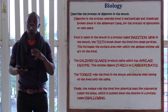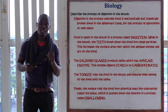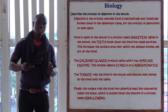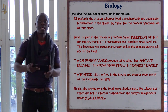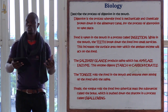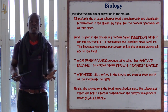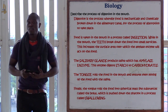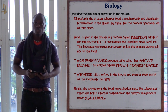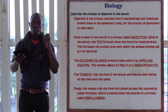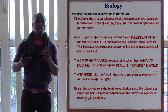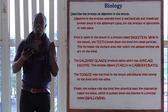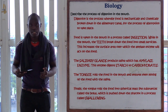The teeth will act on the food to break it down in order to increase the surface area over which the amylase enzyme from the saliva is going to act on the food. The saliva contains the enzyme referred to as salivary amylase. The amylase enzyme digests starch to carbohydrates in the mouth — this is where the digestion of starch begins.